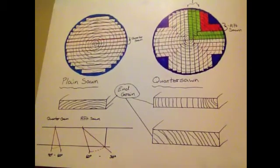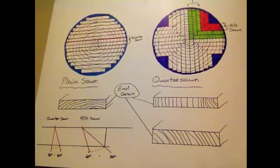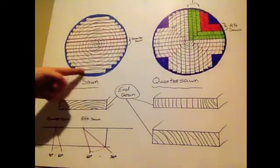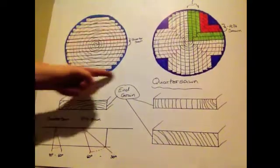Plain sawn is the most commonly used process. This is due to the low cost of production because of the minimal amount of waste wood produced which is represented by this blue color here.